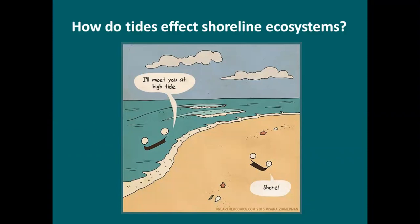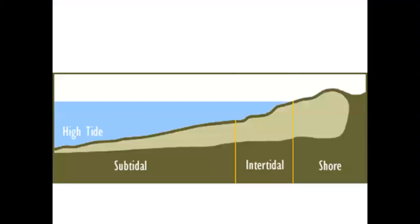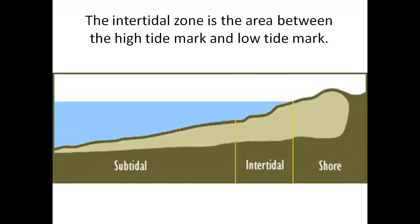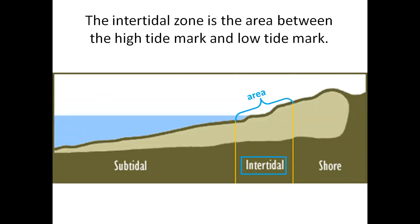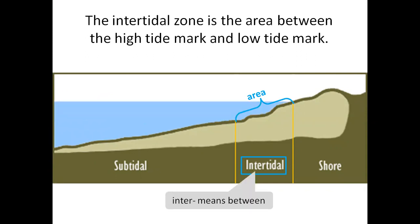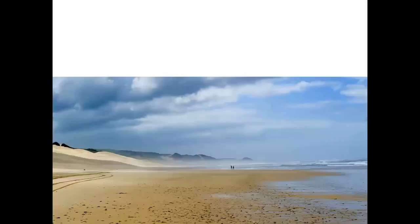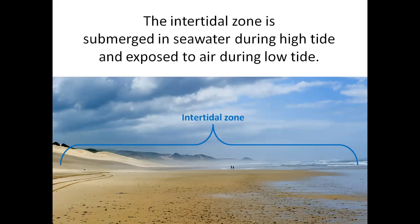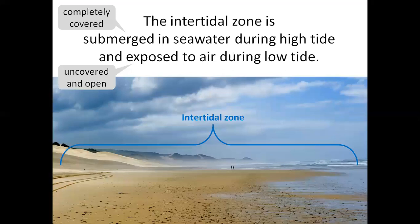How do tides affect shoreline ecosystems? The intertidal zone is the area between the high tide mark and the low tide mark. Inter means between. The intertidal zone is submerged in seawater during high tide — that means completely covered in seawater during high tide — and exposed to air during low tide, meaning uncovered and open.